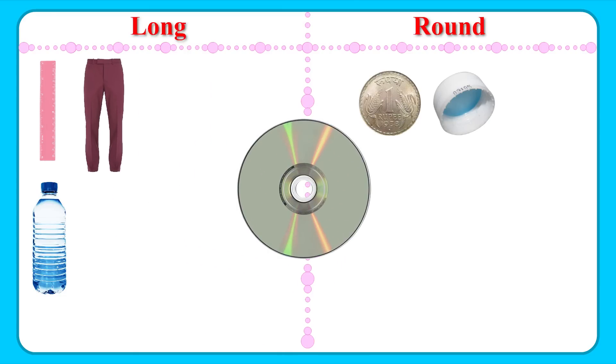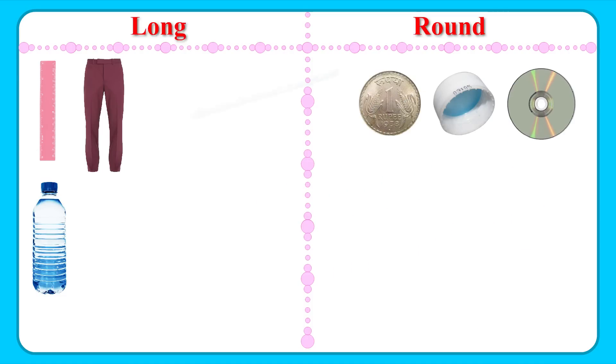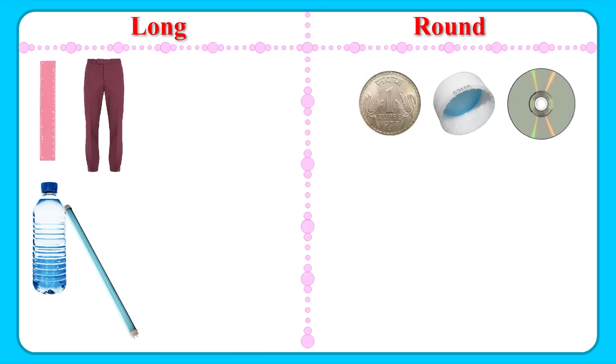A pair of trousers goes under the long category, too. Can you guess in which category would a CD go? You're right, in the round category. What about a tube light? A tube light is long.